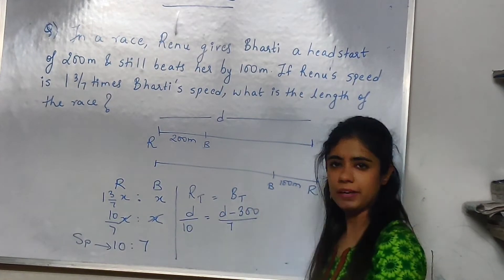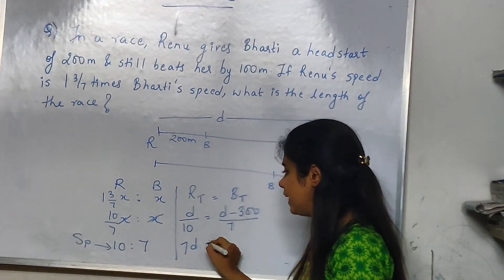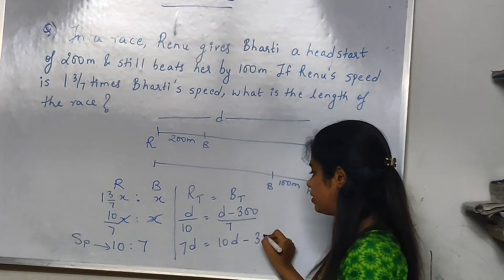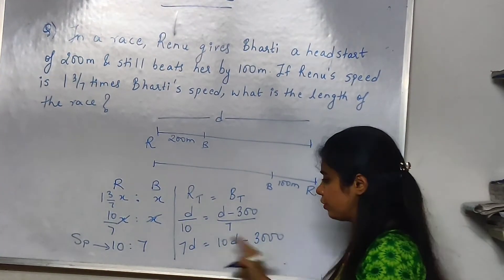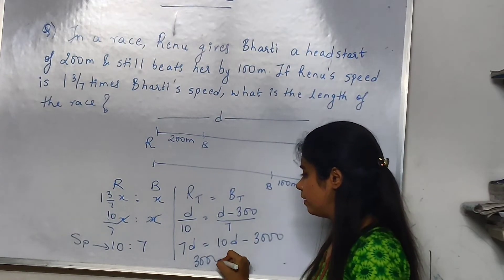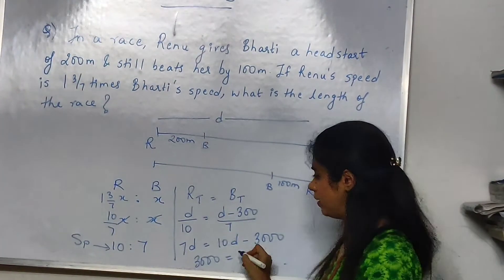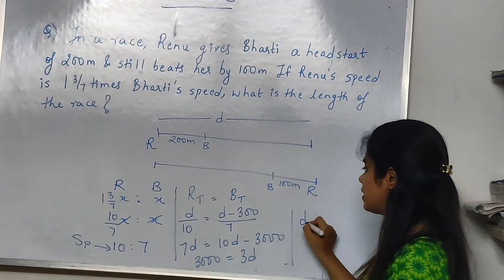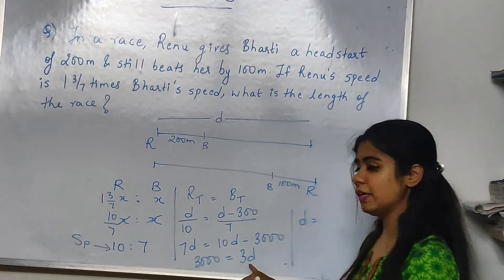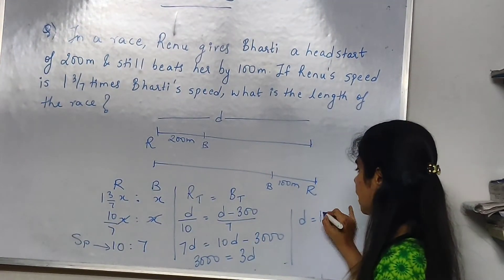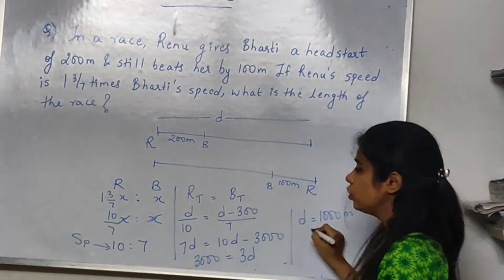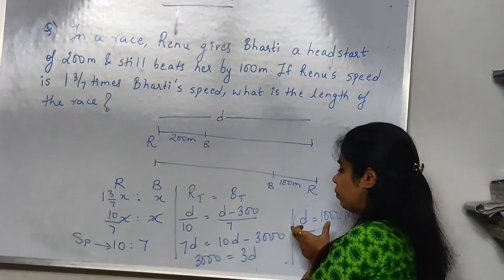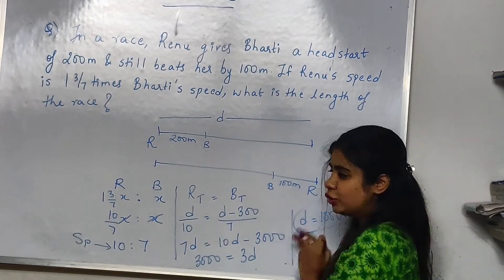Cross-multiplying: 7D = 10(D − 300) = 10D − 3000. So 3000 = 10D − 7D = 3D. Therefore D = 3000/3 = 1000 meters. The length of the race at which both of them were running was 1000 meters.